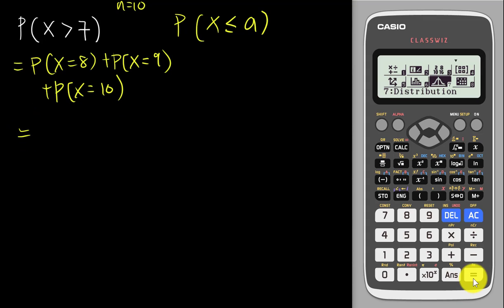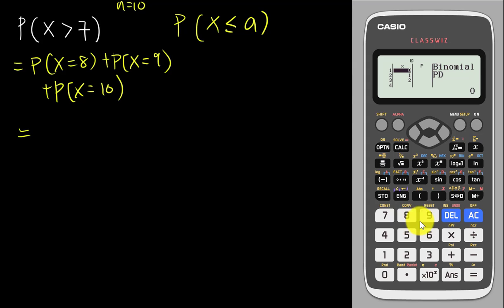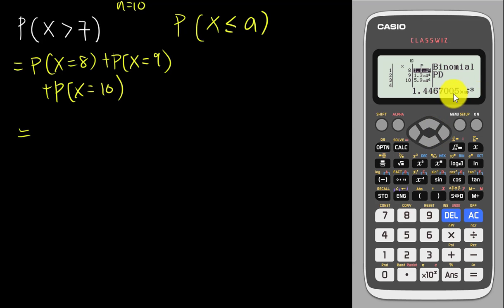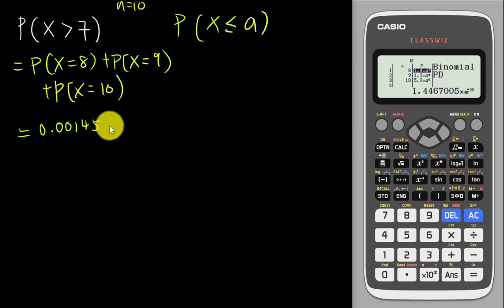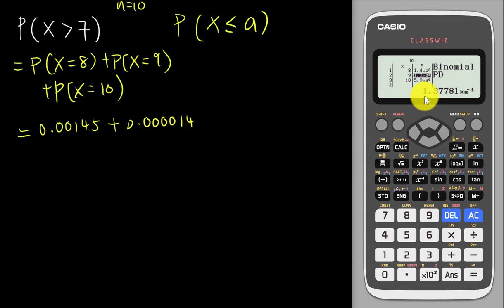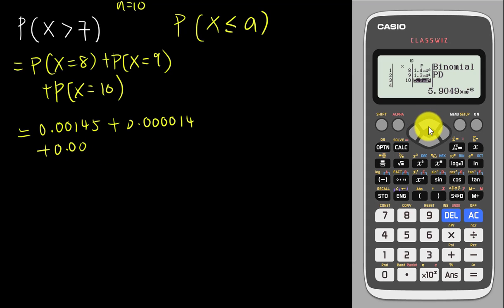You can use the List button in Binomial PD: insert the x values 8, 9, and 10, with n = 10 and p = 0.3. The results are very small numbers — approximately 0.00145 (for x=8), an even smaller value for x=9, and a very small value for x=10.